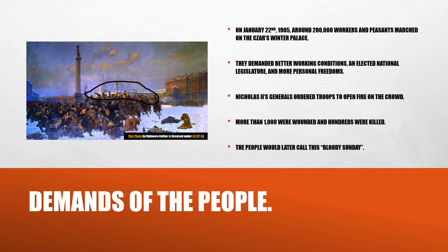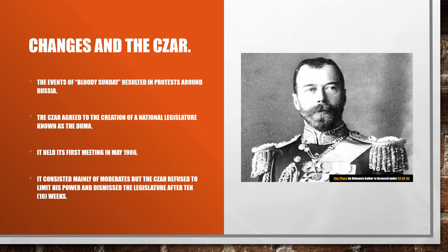This 1905 painting shows the results of Bloody Sunday, which upset a great many people. The events of Bloody Sunday resulted in protests around Russia, and the Czar eventually agreed to the creation of a national legislature known as the Duma, which held its first meeting in May of 1906. However, when the Duma suggested limiting his power, Czar Nicholas II refused and dismissed the legislature after about 10 weeks.